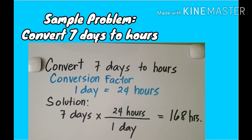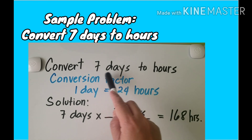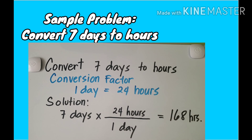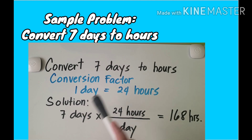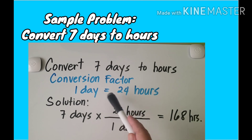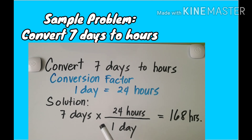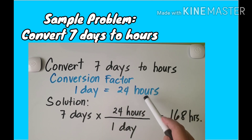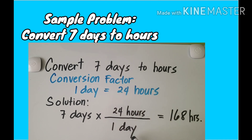Now let us have another sample problem. This time we are going to convert seven days to hours. Remember the conversion factor: one day equals 24 hours. For our solution, copy the given — seven days — and multiply it by the conversion factor. I put 24 hours in the numerator and one day in the denominator.